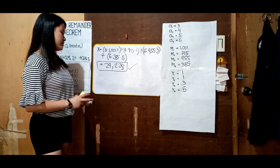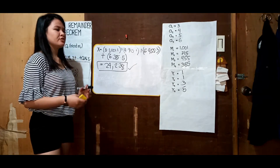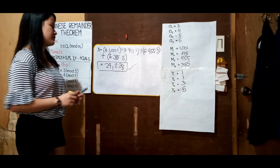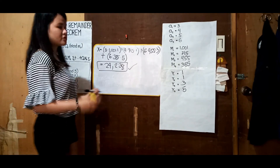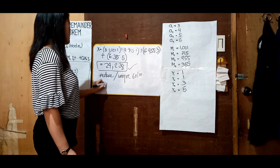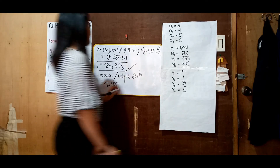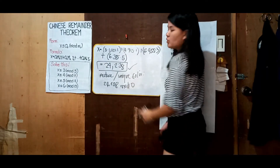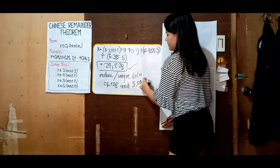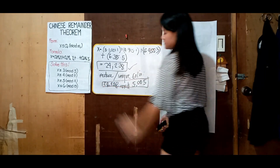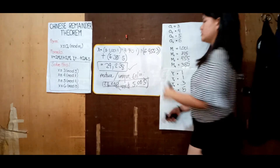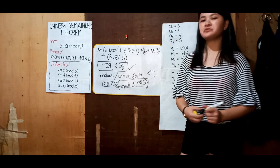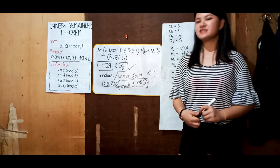This is our solution: x = 24,238. However, if you wish to reduce it to the unique solution, you simply solve 24,238 mod O, where O = 5005. Solving that equation gives you the unique solution. That's all for today's discussion on the Chinese Remainder Theorem. I hope you enjoyed this video and learned something. Have a good day!